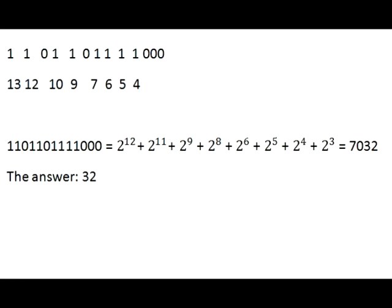These places are 9, 7, 6, 5, and 4. The binary number with ones in these places is equal to 7032. If we divide this number by 1000, the remainder is number 32.